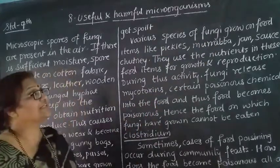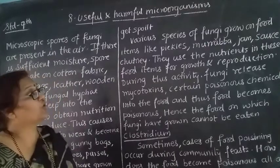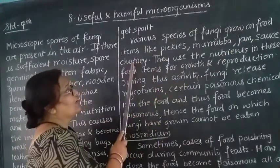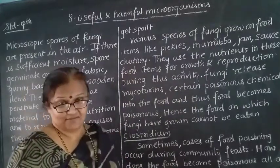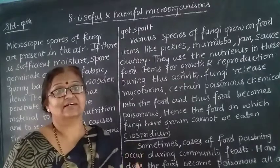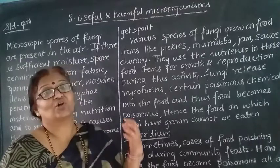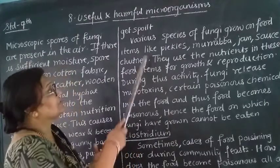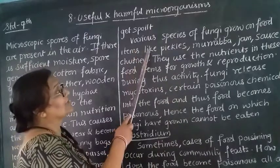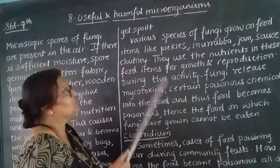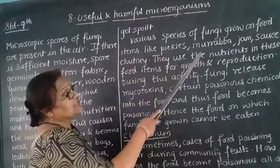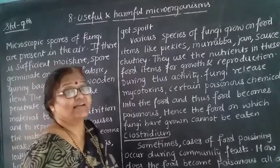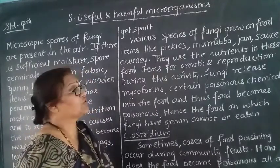Various species of fungi grow on food items like pickles, murabba, jam, sauce, and chutney. If you open a vessel containing murabba or pickles after a long time, you may see that fungus has grown on it. Fungi use the nutrients in these food items for growth and reproduction.